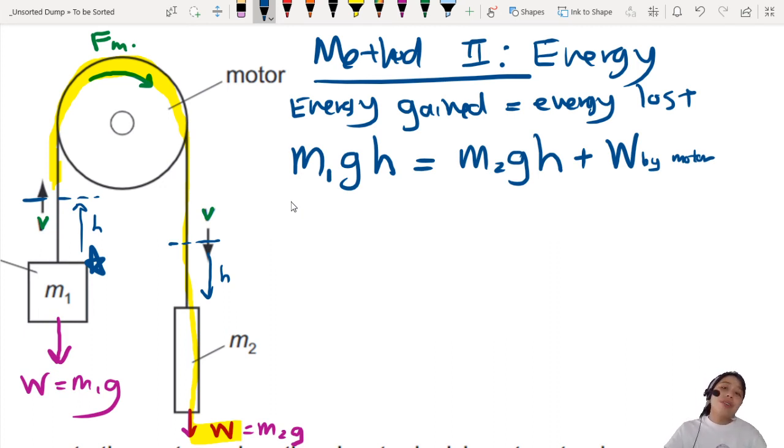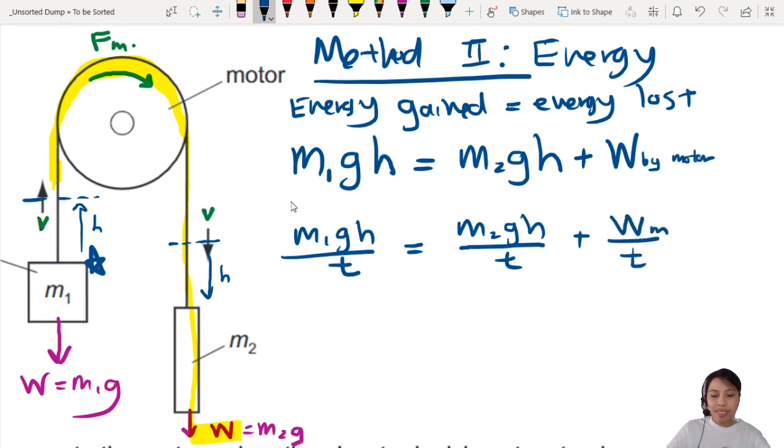So you need to find the rate of energy. So you divide everything by time. So what you have is M1gh over time. So this is the power now. Because energy divided by time. This one divided by time. This one also divided by time.